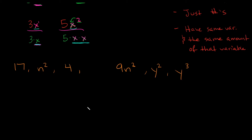I'm gonna start off by showing you a list of terms, and then we're gonna do a little matching game and figure out if we can match any of these up and call them like terms, or if they're too different and they're not like terms. Here's our list of terms: we have 17, n squared, 4, 9n squared, y squared, and y cubed.